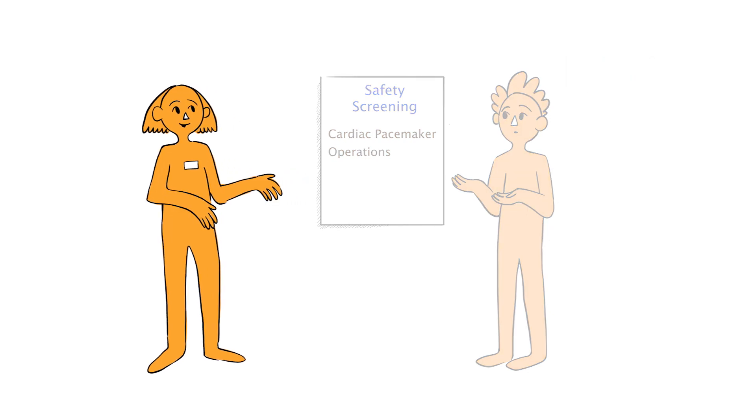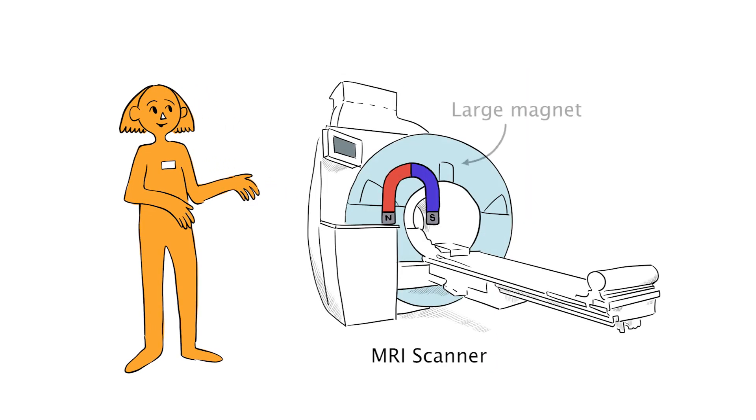Well, the MRI scanner uses a large magnet, which is always on. The magnet is very strong, so we need to check there is nothing in or on your body which could be affected by the magnet. For example, anything metallic.